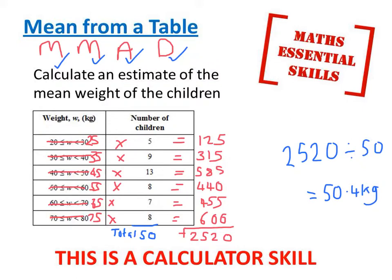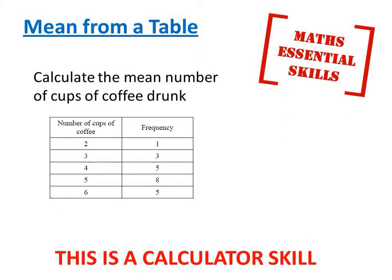There's lots of steps. There is one other question I want to show you. Here again, it wants you to do the mean from a table, and I would encourage you to think mean means add and divide, and M-M-A-D. Now, the only difference on this one is, if you look at this category on the left, there isn't actually the option to find a midpoint. That bit's already done for you, so I can tick that one off already.